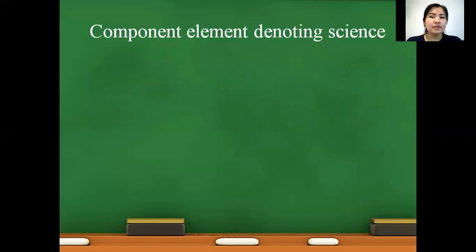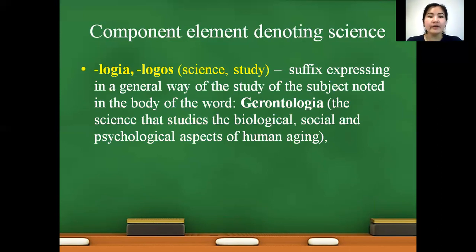Let's discuss each type of component element in detail. The first type is component elements denoting science. In this group we have the following component elements: logia, logos — from Latin meaning science and study. Example: gerontologia. Gerontologia is the branch of medicine dealing with the biological, social, and psychological aspects of human aging.